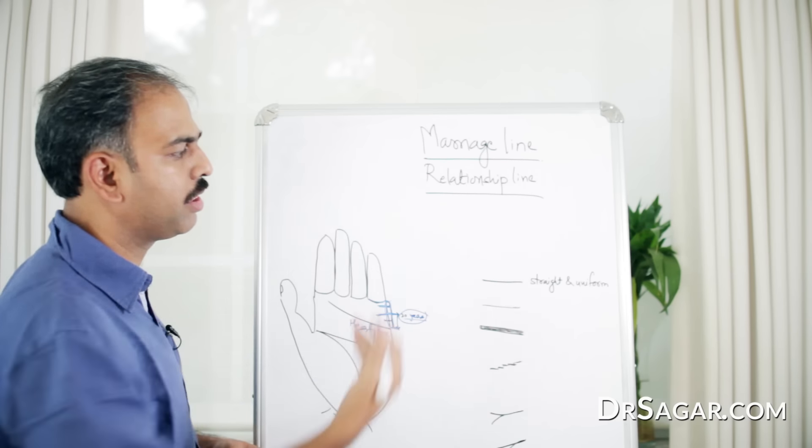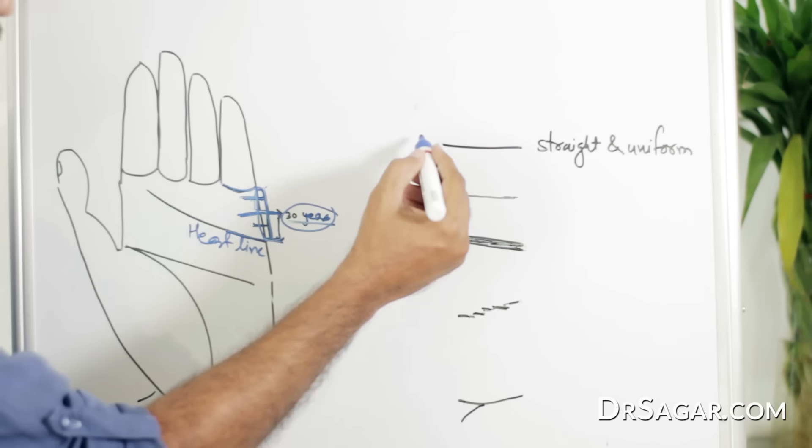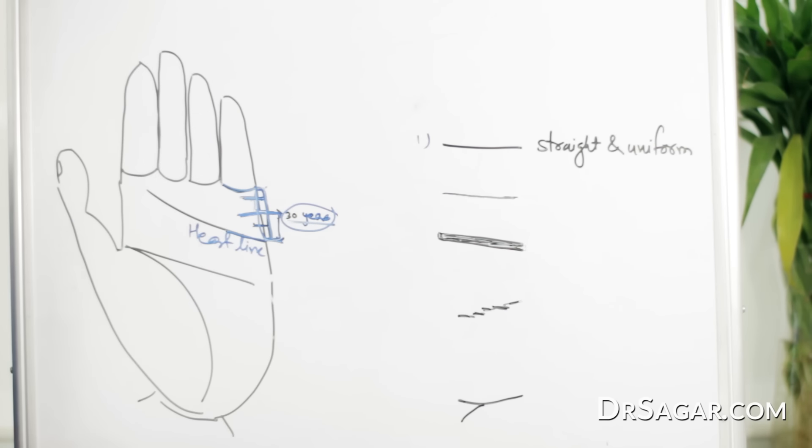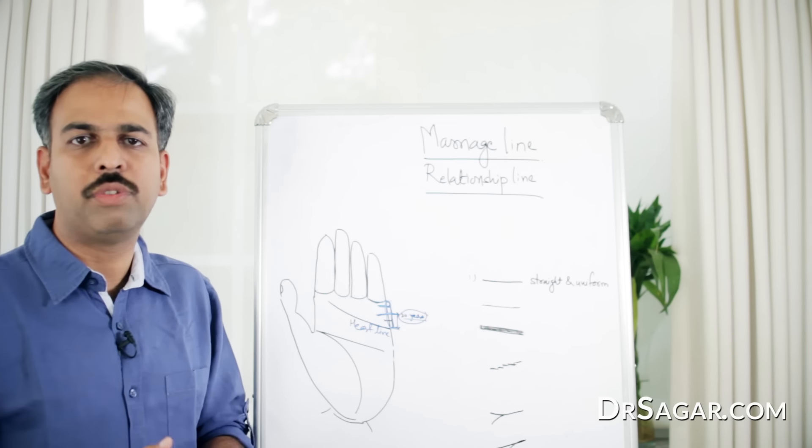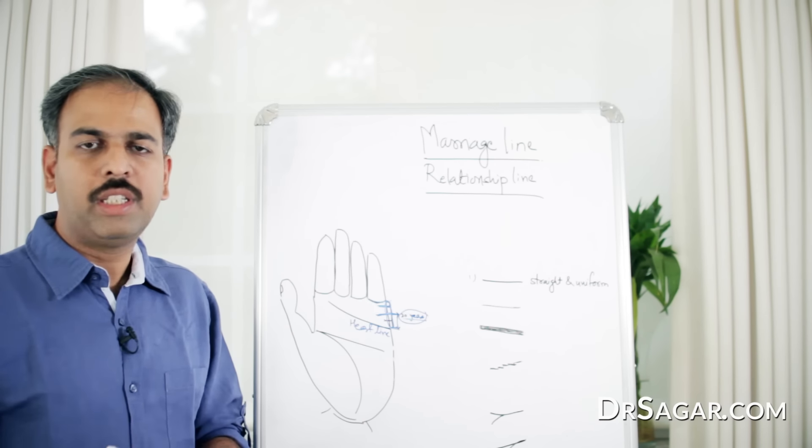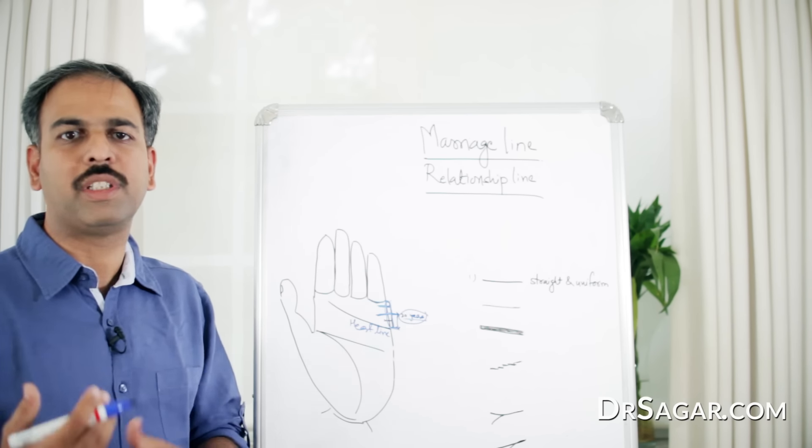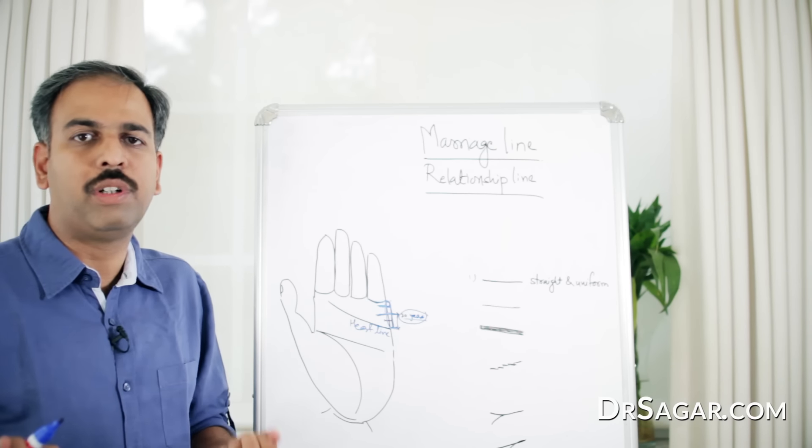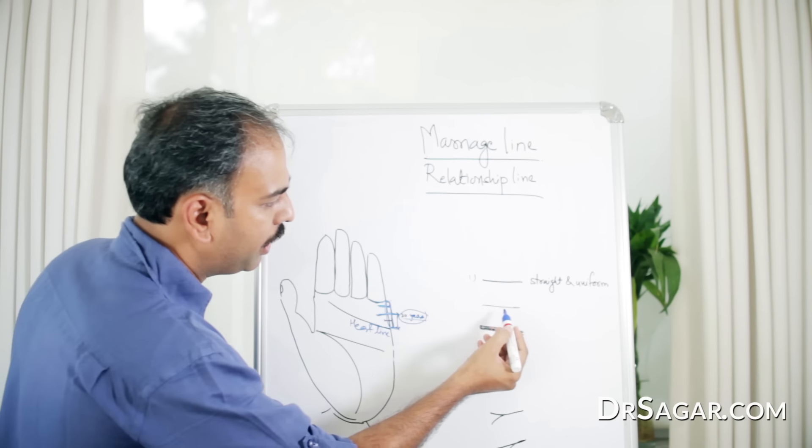Now, we'll go to the character of the marriage line. First, if it's a straight, deep, and uniform line, then the partner with which you are in relationship is very consistent about his relationship, about his love. He is holding you strongly in your relationship.